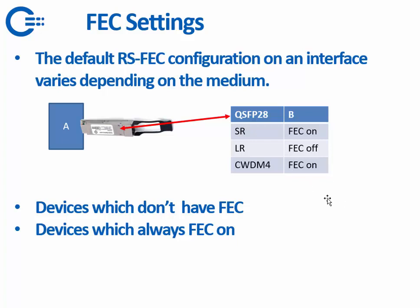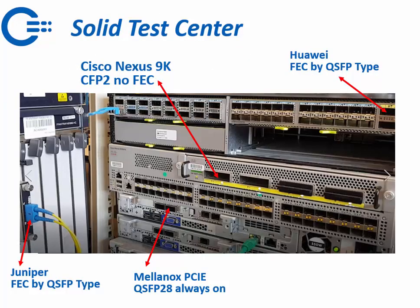This behavior is not the same across all vendors, and that is the problem with interoperability between 100 Gigabit devices. Some devices have no FEC control at all, and some have FEC always on — where you simply cannot switch it off.